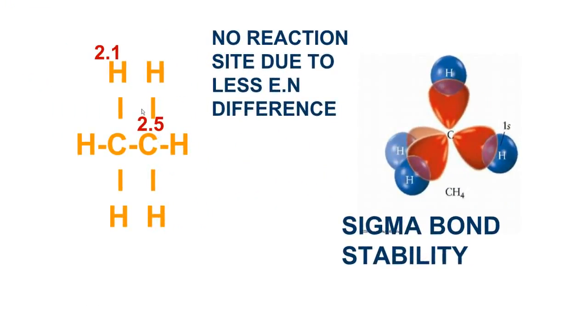The electronegativity of carbon is 2.5 and hydrogen is 2.1. The unreactivity of alkanes under normal conditions may be explained on the basis of non-polarity of the bonds forming them. The electronegativity values of carbon (2.5) and hydrogen (2.1) do not differ appreciably, and the bonding electrons between carbon-hydrogen and carbon-carbon are equally shared, making them almost non-polar.